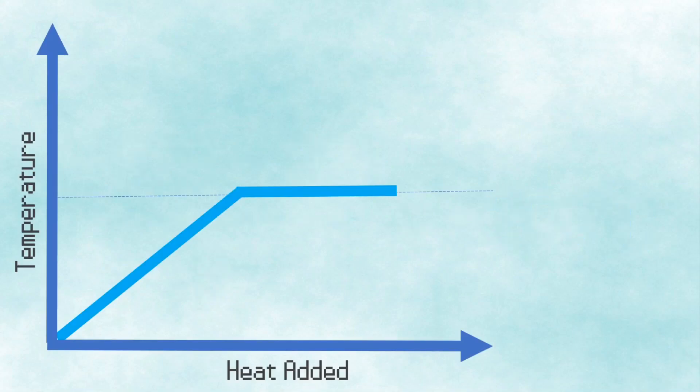So, since Regice starts out at negative 200 degrees Celsius, and ice melts at 0 degrees Celsius, we have to raise its temperature by 200 degrees Celsius.